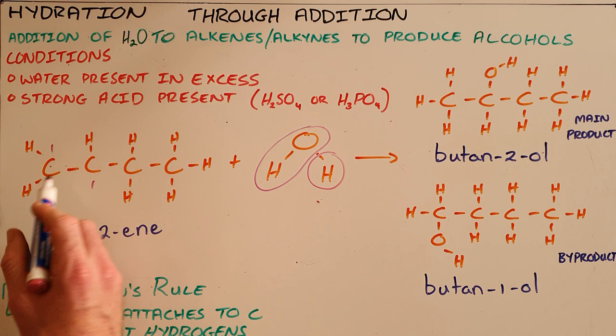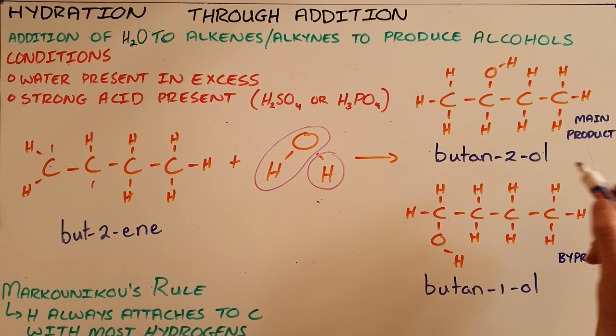As we can see this carbon, carbon number one, already had two hydrogens to start with where carbon number two only had one hydrogen.